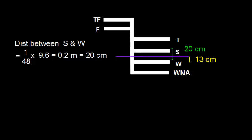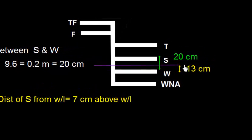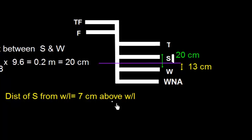We can find the sinkage. The distance of S mark, that is summer load line, will be 7 cm above water line. The total is 20 and this one is 13. The difference is 7 cm, so the summer load line mark is 7 cm above water line.